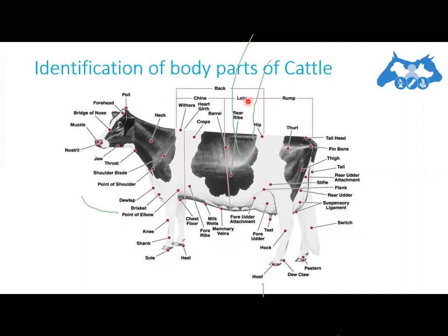The back contains two parts: the chine and loin area. The chine portion extends up to the ribs — specifically up to where the last rib is. When the rib area finishes toward the hip point, the loin portion is present. These are the general external body features of cattle.